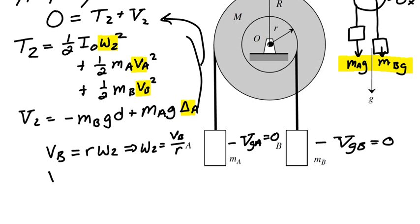I can use somewhat similar logic and say then that the speed of block A is equal to big R times omega 2, which is going to equal, in this case, big R times quantity V_B divided by R. So that'll give me another unknown which I can use and substitute in the equation.